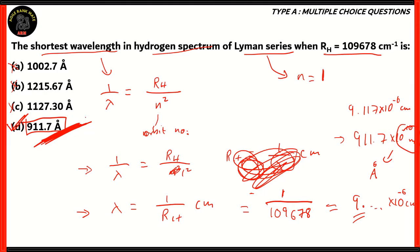So option D is the correct option for the shortest wavelength in the hydrogen spectrum of the Lyman series when RH is 109678. This value is something that can be memorized because it's often asked in questions. The shortest wavelength of the Lyman series spectrum would be the shortest wavelength of the entire hydrogen spectrum. So 911.7 angstroms is something you need to memorize — just keep it in the back of your head, and whenever the calculations come in, you can substitute the value instead of calculating everything.